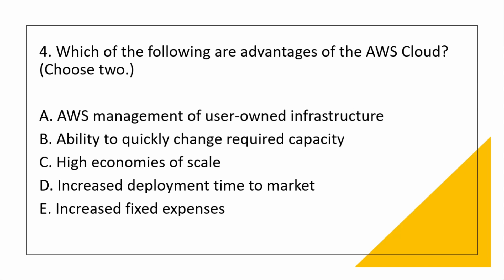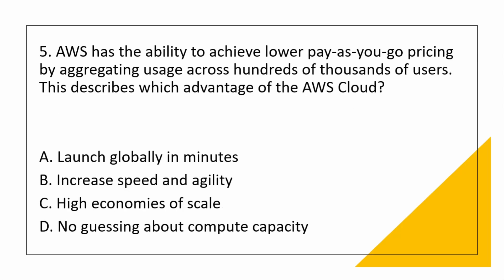AWS has the ability to achieve lower pay-as-you-go pricing by aggregating usage across hundreds of thousands of users. This describes which advantage? The answer is high economies of scale. Launching globally in minutes is not an advantage of pricing, and increased speed and agility is not the right match here either.